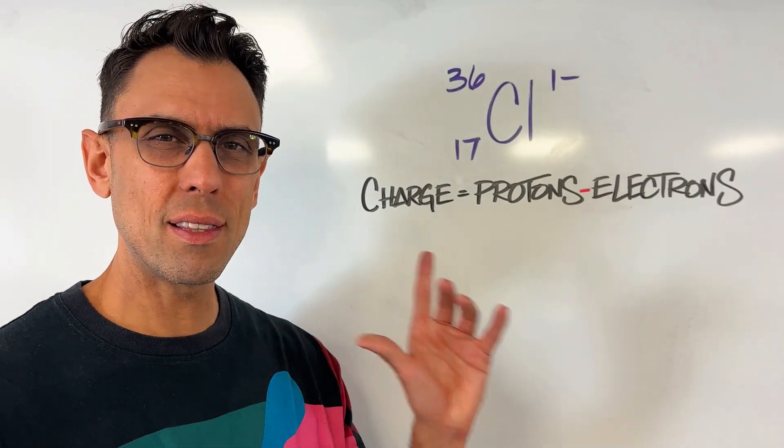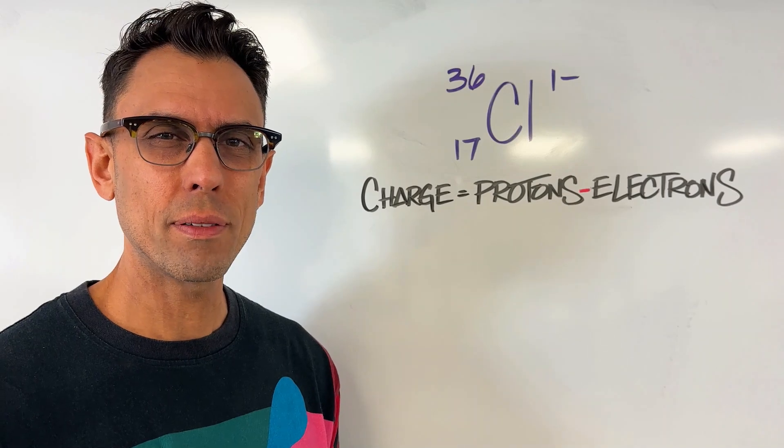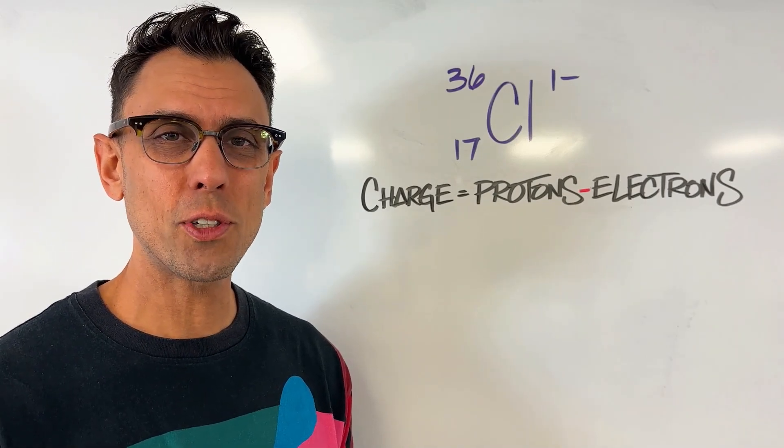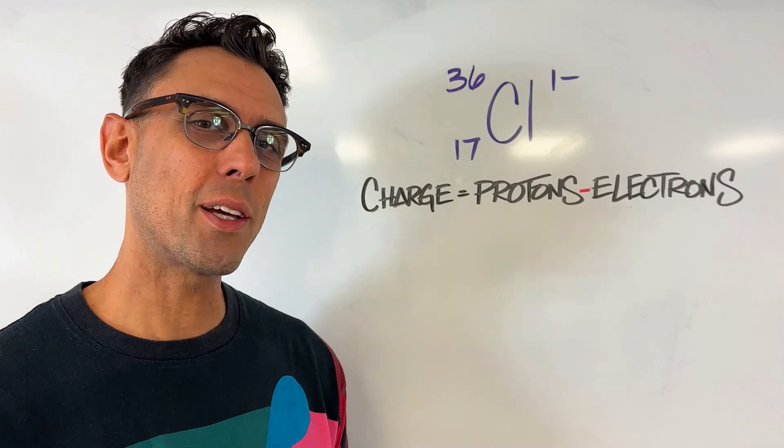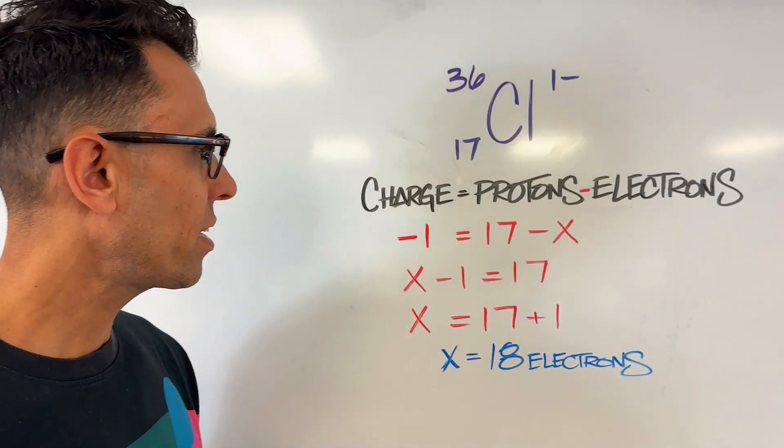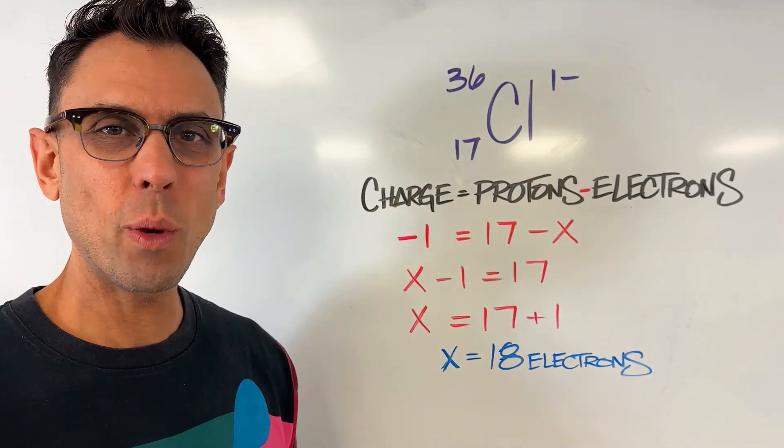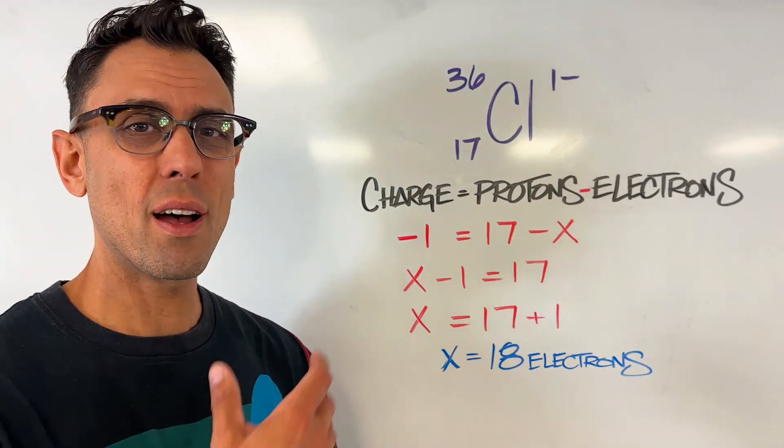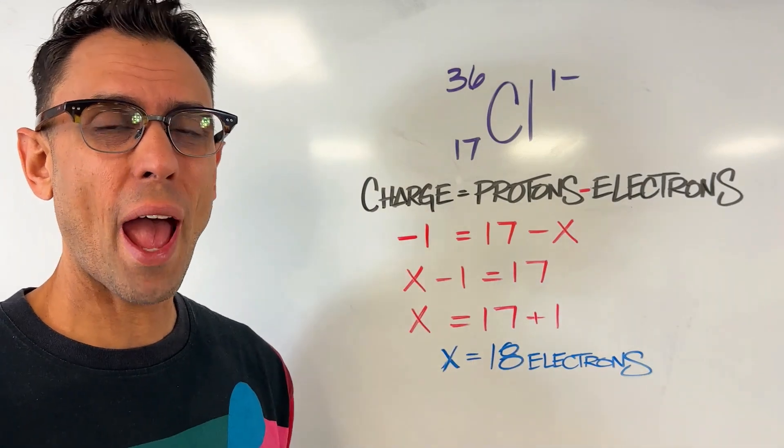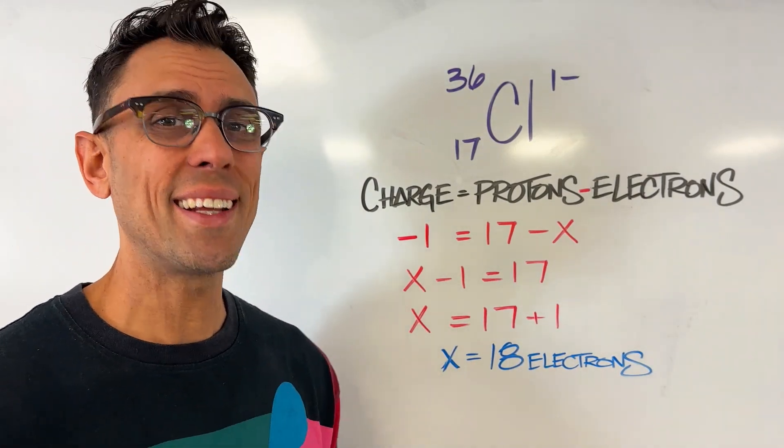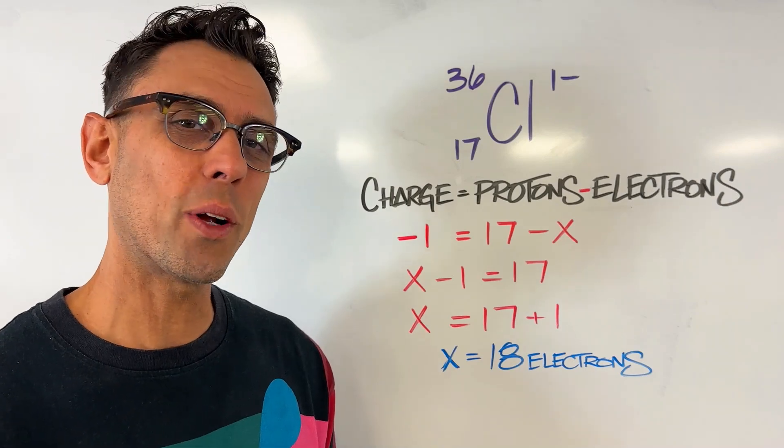How many electrons does this chlorine atom have? Pause the video, go through those algebraic steps I just showed you, and come back to check your work. The correct answer, 18 electrons. You can see that using the equation we went over previously, by plugging in the numbers we know, protons, the charge, solving for x using some rearrangement, we get to a final answer of 18 negatively charged particles in this chlorine atom. Okay, let's try one more.